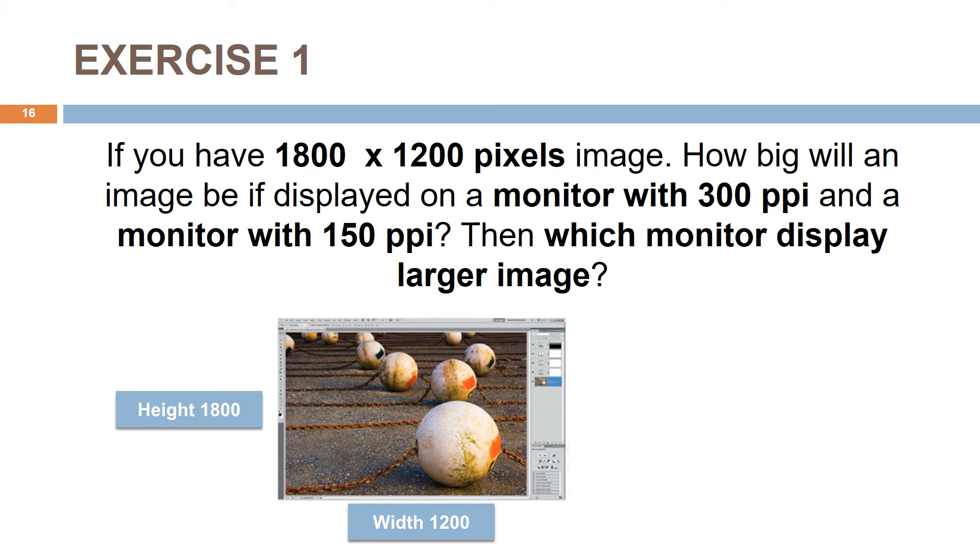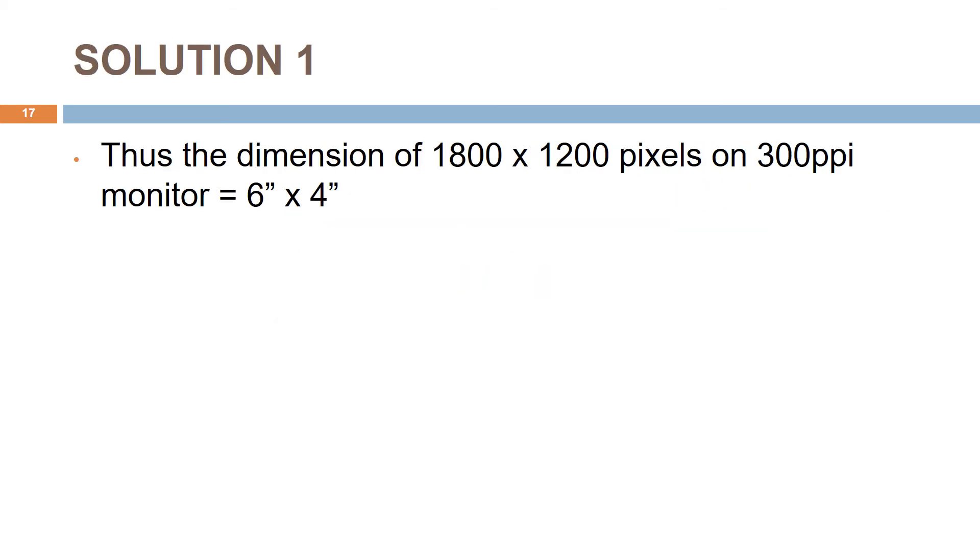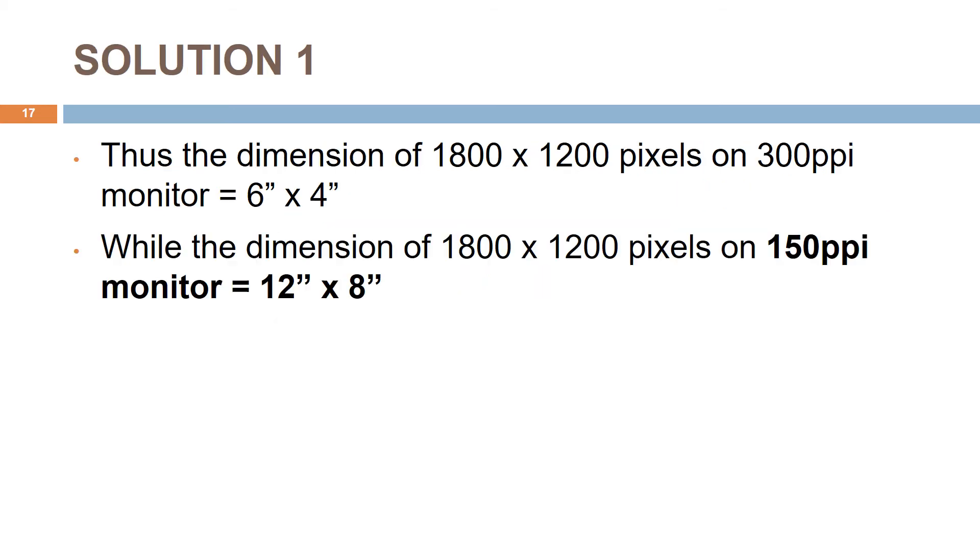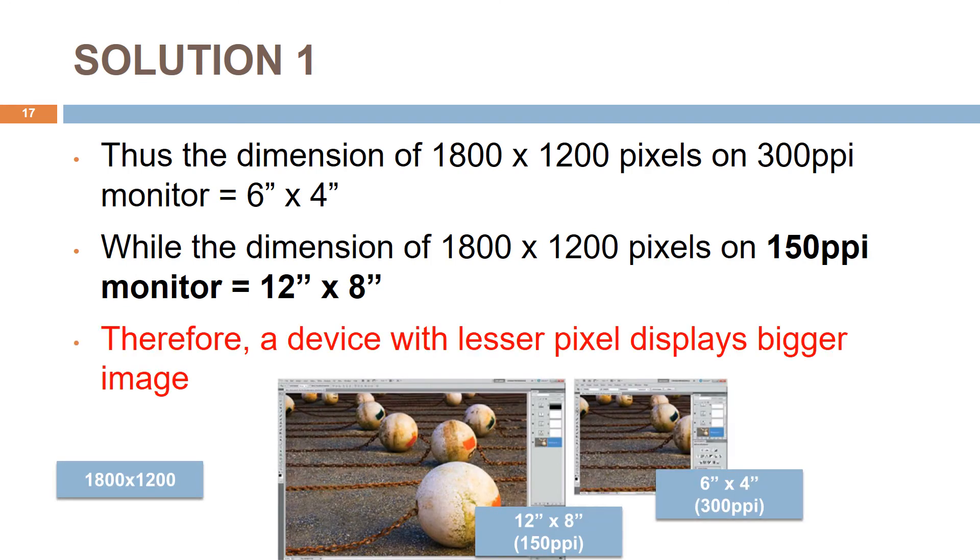1800 x 1200 pixels means 1800 pixels of height and 1200 pixels of width. Find physical dimensions for height and width by dividing with the device resolution. We get 1800 divided by 300 PPI equals 6 inches of height and 1200 divided by 300 PPI equals 4 inches of width. So the dimension is 6 x 4 inches. Repeating for 150 PPI resolution, we got 12 x 8 inches. So we conclude that a device with lesser pixels displays bigger images.